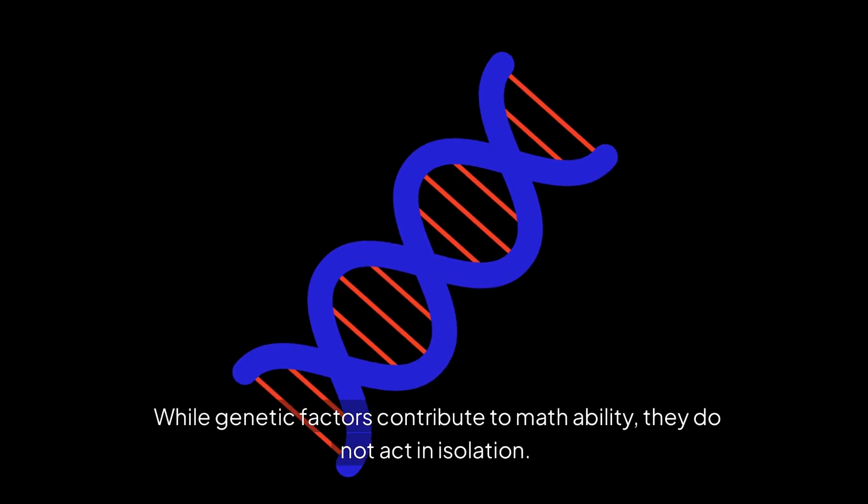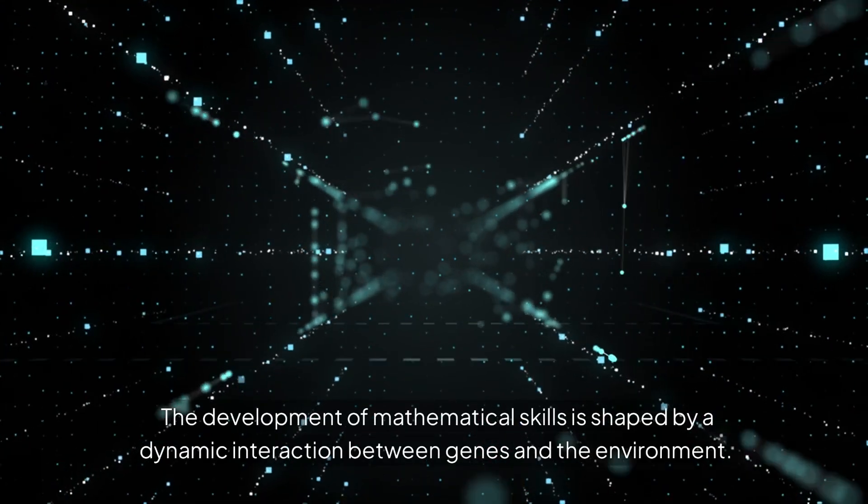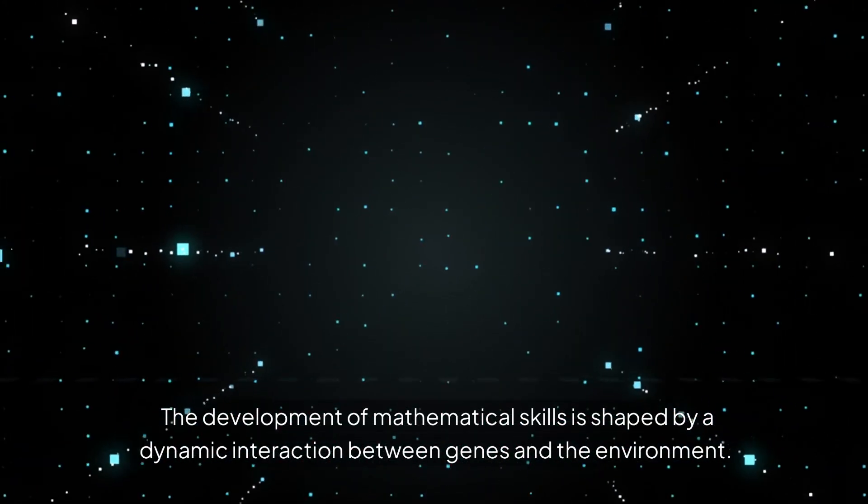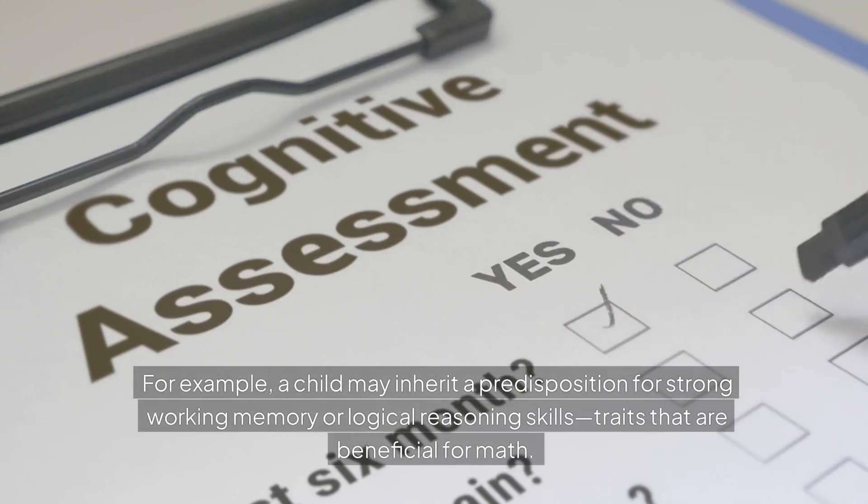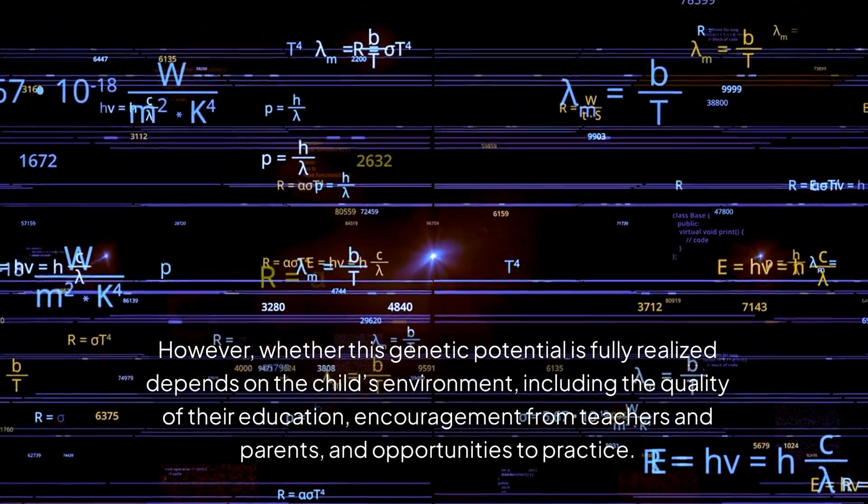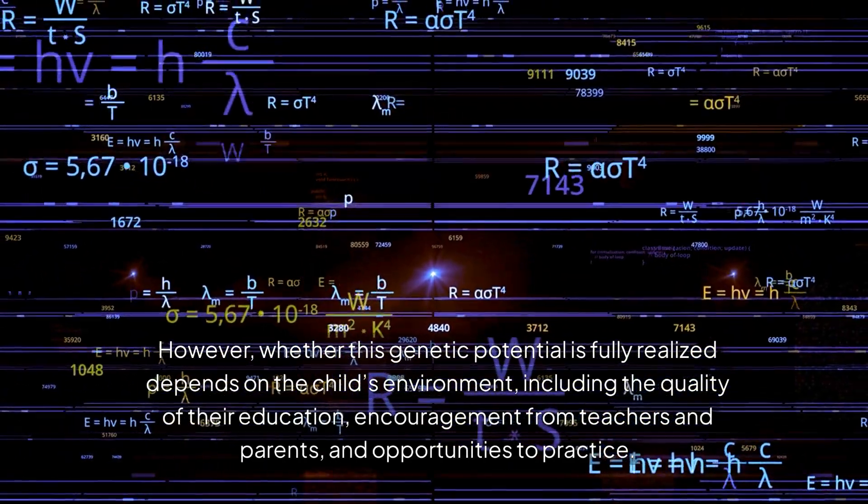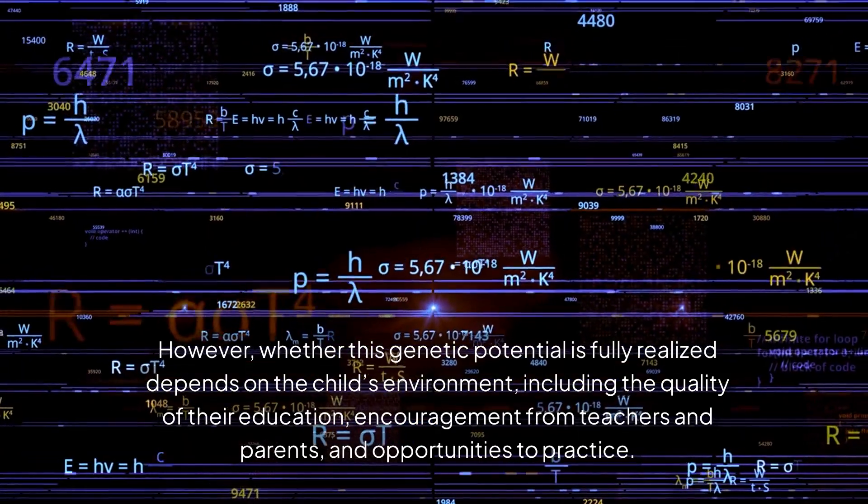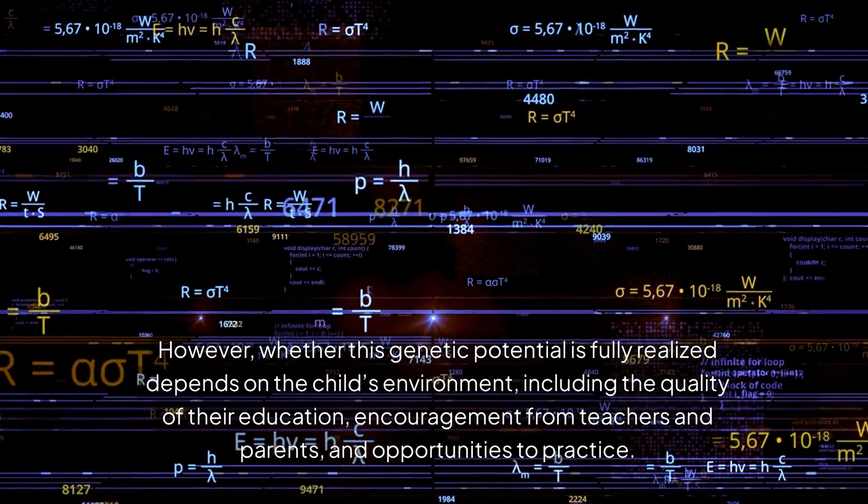Gene-environment interactions: While genetic factors contribute to math ability, they do not act in isolation. The development of mathematical skills is shaped by a dynamic interaction between genes and the environment. For example, a child may inherit a predisposition for strong working memory or logical reasoning skills, traits that are beneficial for math. However, whether this genetic potential is fully realized depends on the child's environment, including the quality of their education, encouragement from teachers and parents, and opportunities to practice.